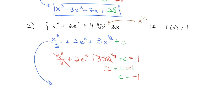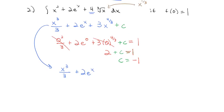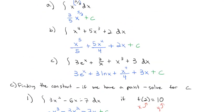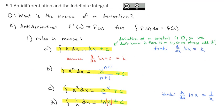Our final anti-derivative is x cubed over 3 plus 2e to the x plus 3x to the 4/3 minus 1. That is how we do the opposite of a derivative — term by term, using derivative rules in reverse. Practice these integral rules until you're very comfortable before moving on. Come to class with any questions, and we'll also look at some applications.